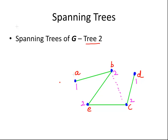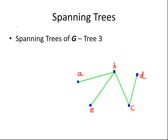Finally let's look at tree three. What we've done here is remove the edge from C to E. The degree sequence is: 1, 3, 1, 2, and 1. We can't remove any more edges, so we've actually got all of the spanning trees of G: tree one, tree two, and tree three.